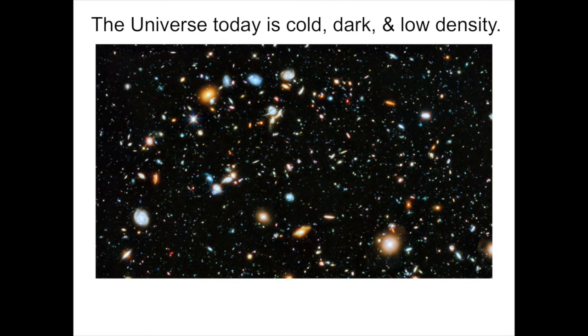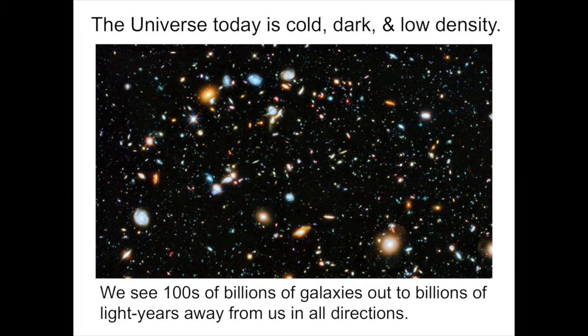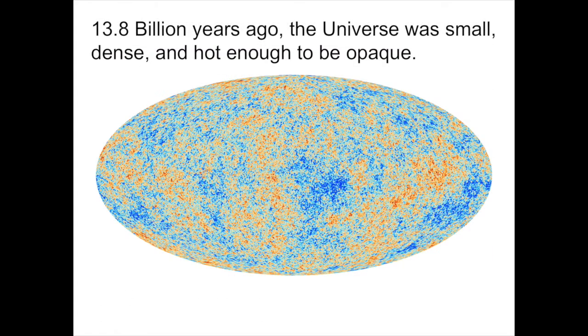The universe we see today is cold, dark, and low density. We see hundreds of billions of galaxies out to billions of light years away from us in all directions. But it didn't always look this way. 13.8 billion years ago, the universe was small, dense, and hot enough to be opaque.